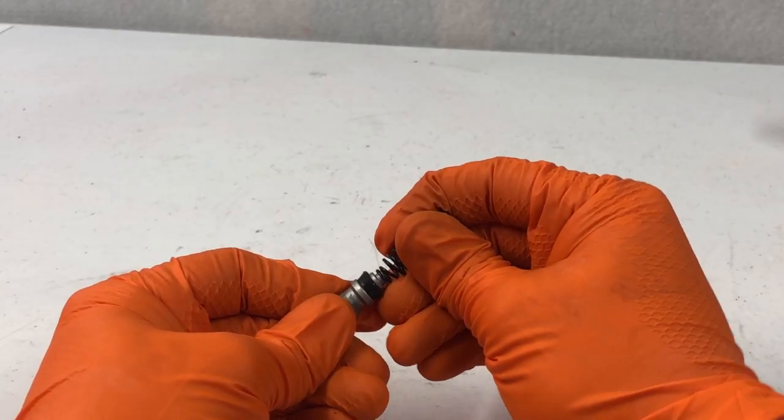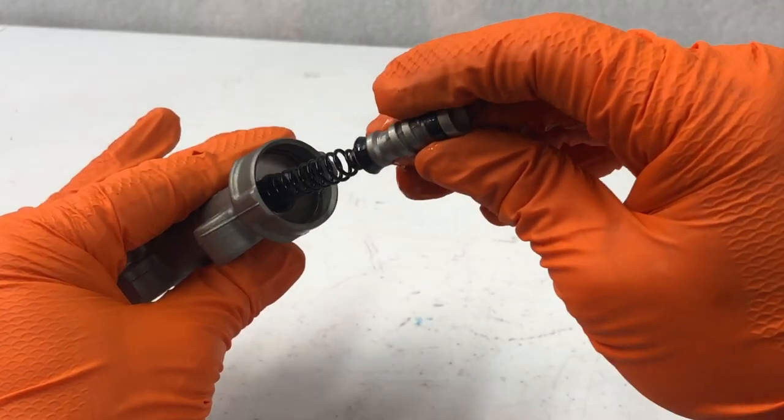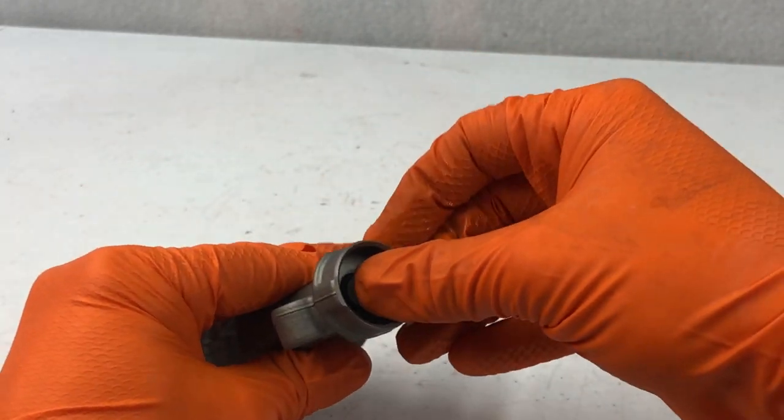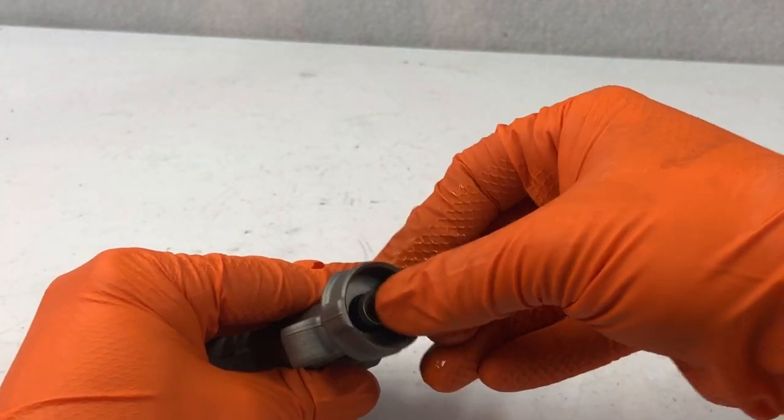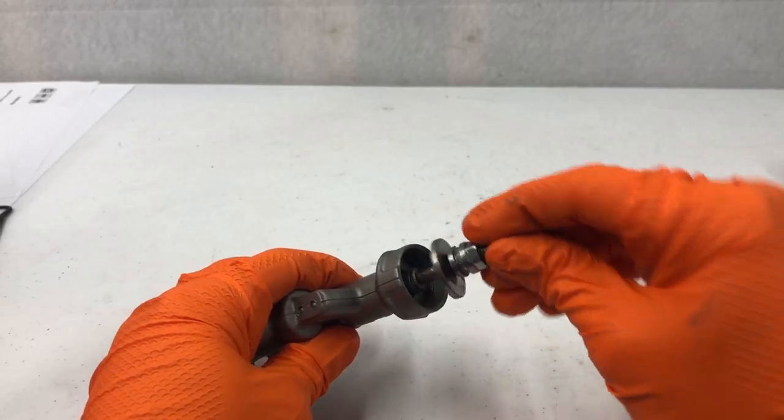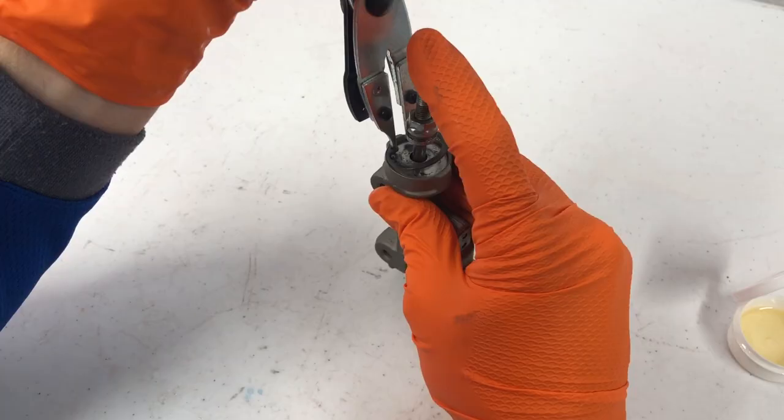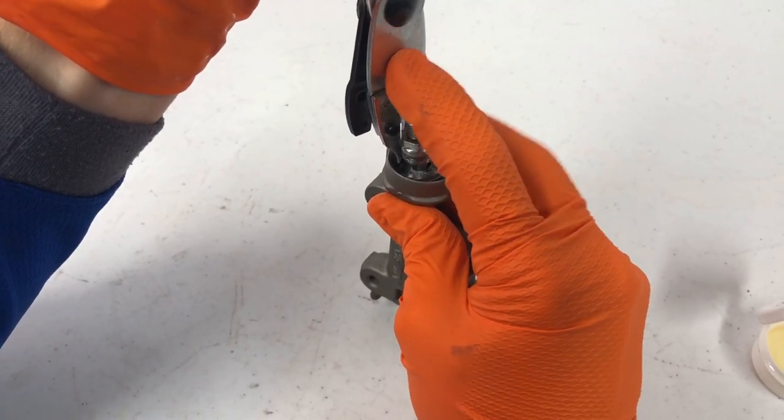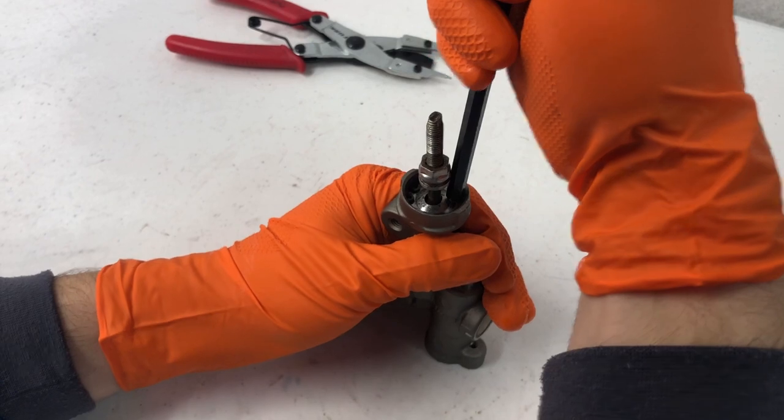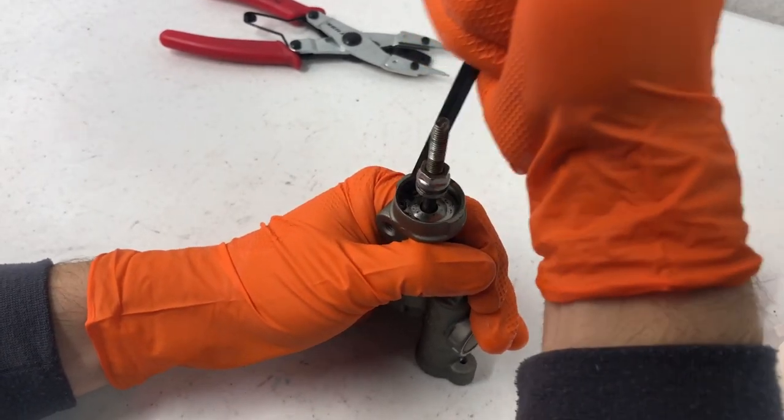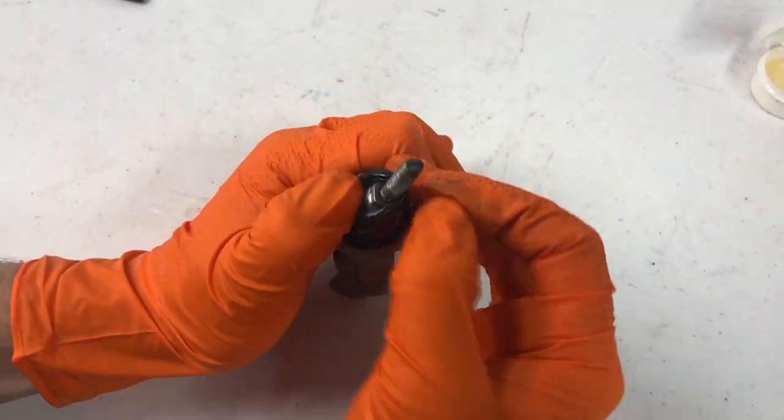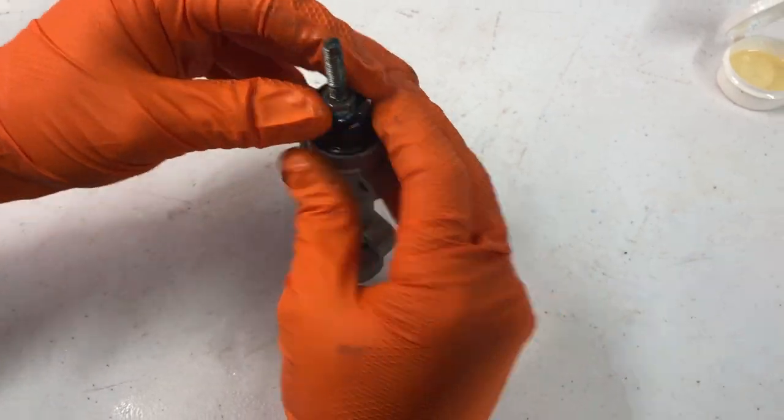And now we can pop our new spring on that came with the rebuild kit and then we'll go ahead and slide our piston into the cylinder and make sure it actuates correctly. And it feels pretty good. This push rod lines up here with the piston and then I'll push it down and use the circlip pliers to get this started. And then I'll use an allen bit to push it in and get it to snap into place. You guys can use anything that'll fit in there.